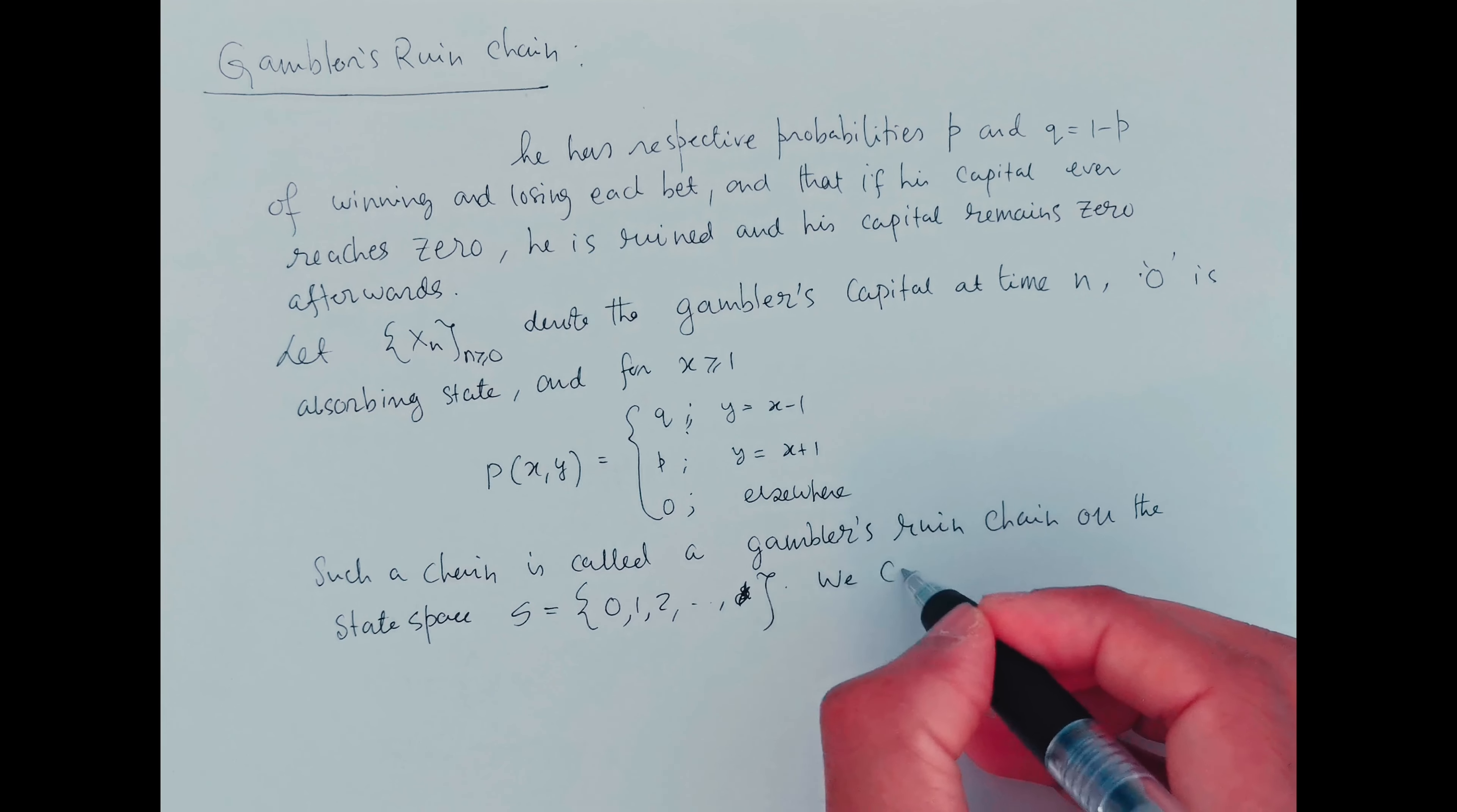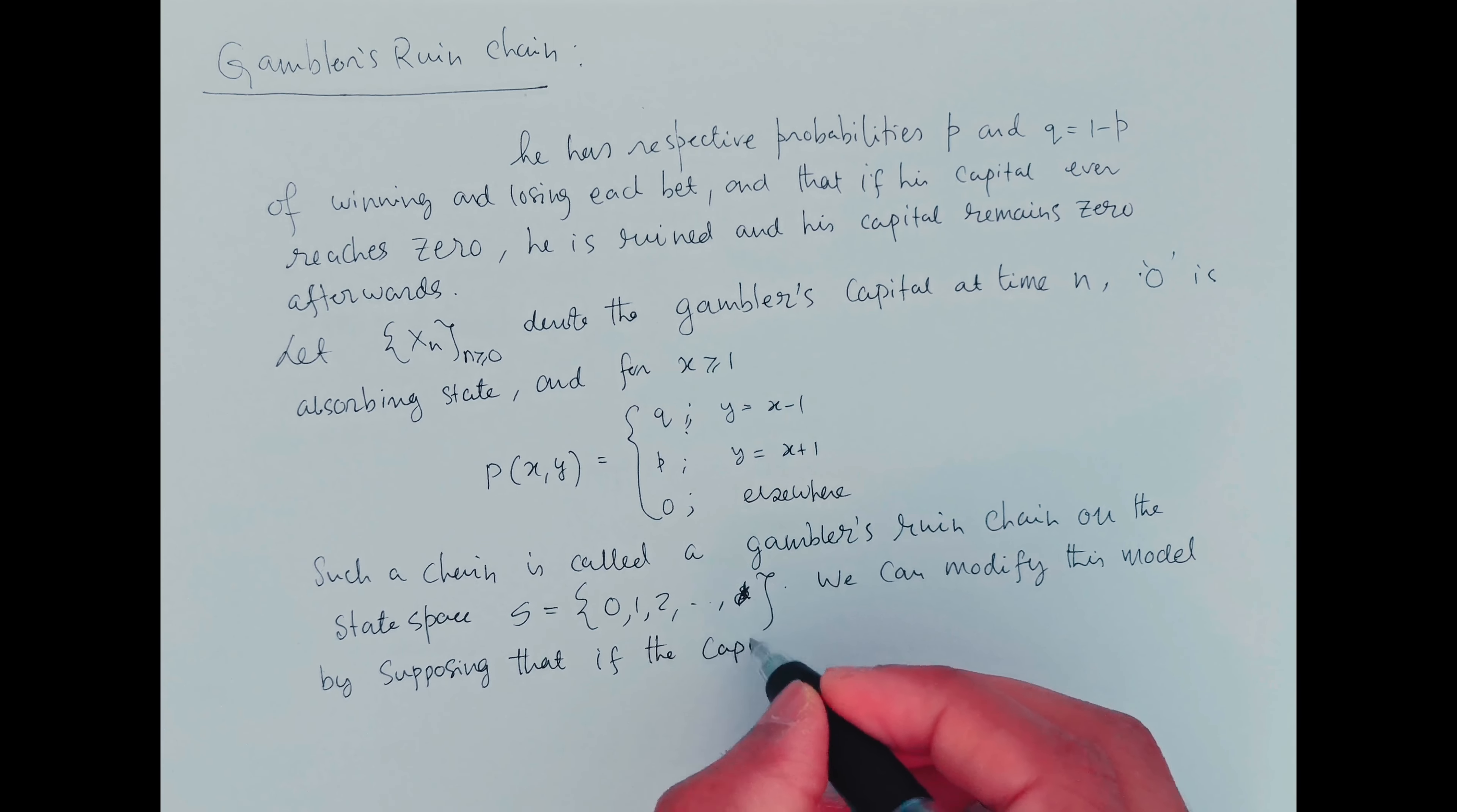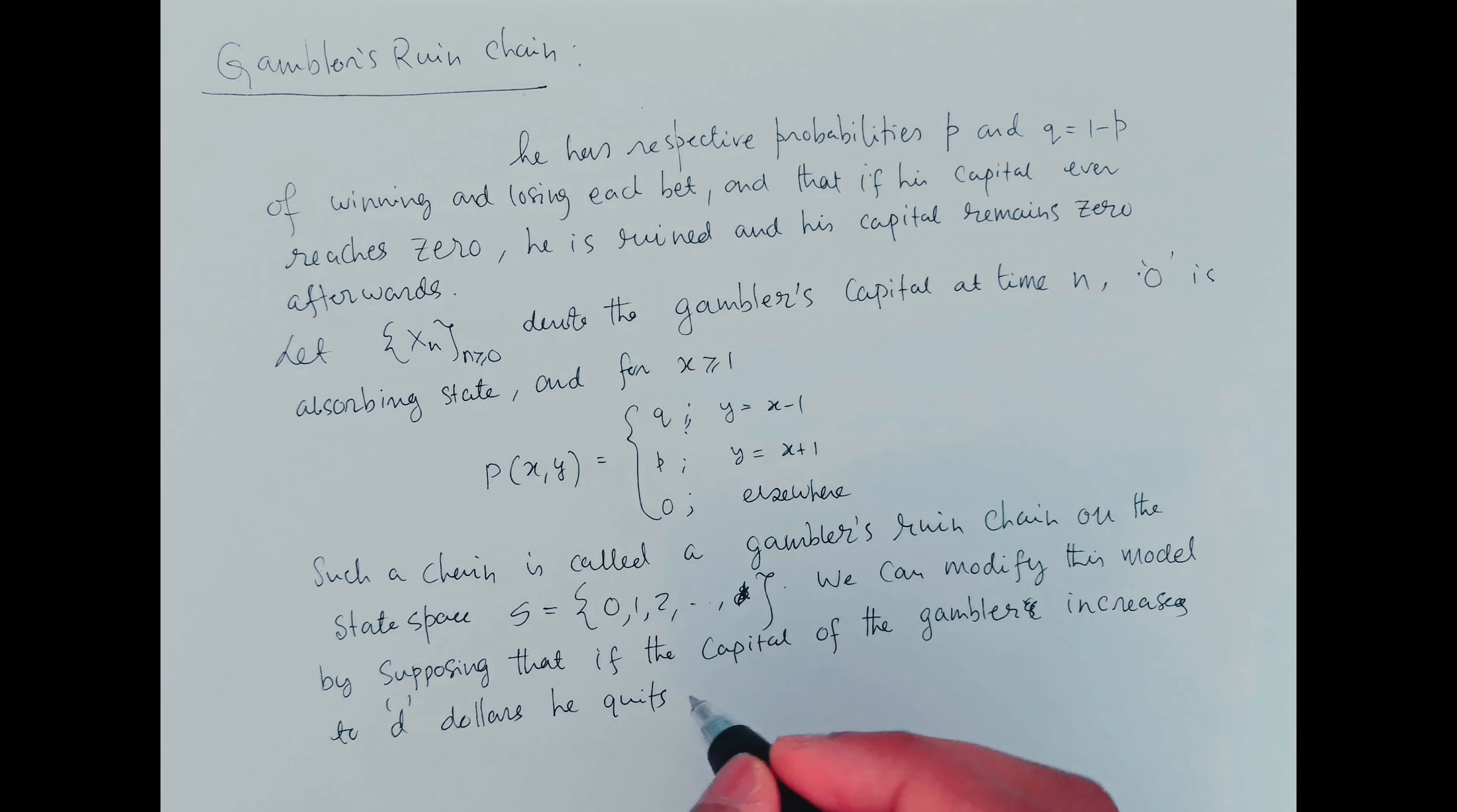So we can modify this model by supposing that if the capital of the gambler increases to D dollars, he quits playing.